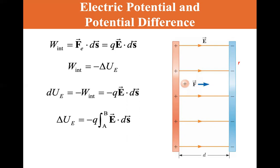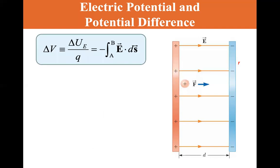And this delta U, this difference in electric potential we call volts. So it's UE divided by q. So delta V is equal to delta U divided by q, and that's equal to the minus the integral from A to B of E dot ds.